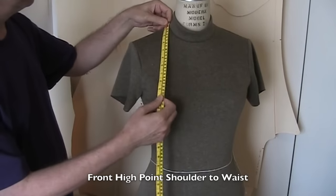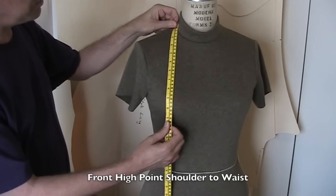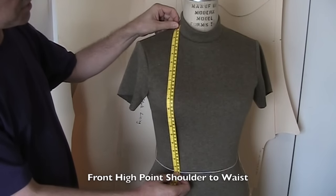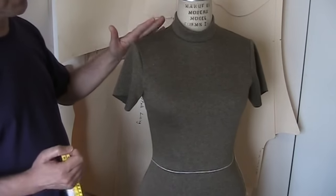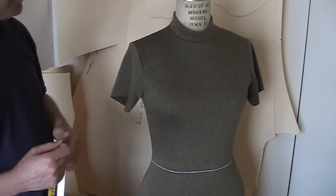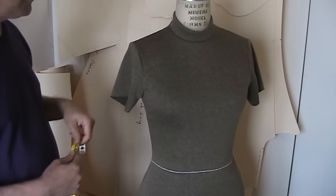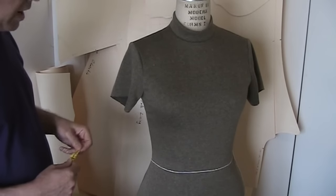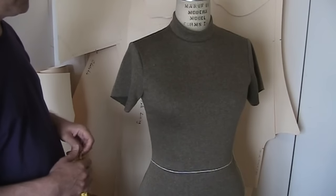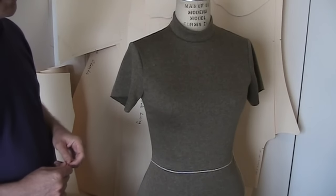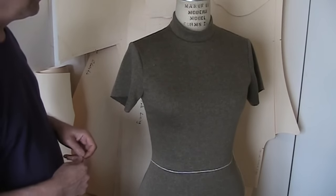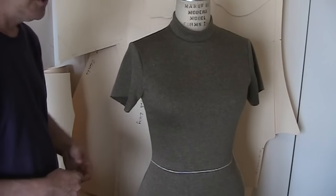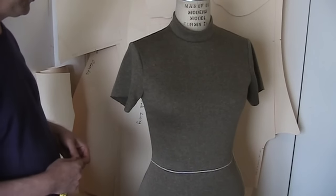The front high point shoulder to waist measurement, I'm getting 17 and a half, which is the same as the back. That's because this is a very balanced dress form. On the average person, the front high point shoulder to waist measurement may be longer or shorter than the back. Especially if the woman is full busted, the front is going to measure longer than the back. Or if a woman is particularly small busted or with a stooping posture, the front may be shorter than the back.